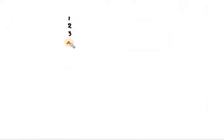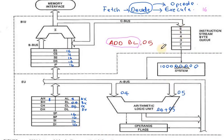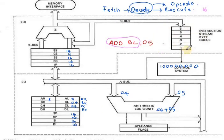Looking at the queue — instructions are loaded into the first, second, and sixth slots of the byte queue. Normally in a pipelined system, the first instruction executes, then the second, then the third, then the fourth in sequence.